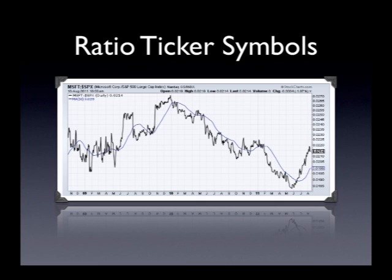John uses this with intermarket analysis constantly. In this case, we're comparing Microsoft to the S&P 500. We can see that there was a point in time in 2009 where Microsoft was nicely outperforming. The good times ended around January 2010, because from that point on until recently, that line was trending down — meaning the S&P was outperforming Microsoft. Recently it turned around, though this chart is a little old.